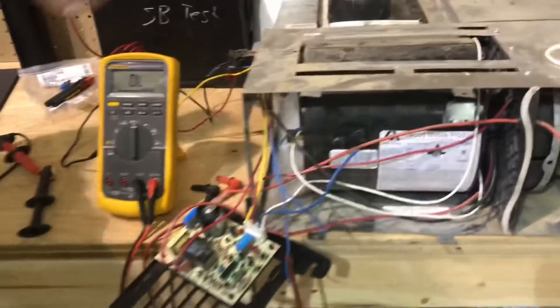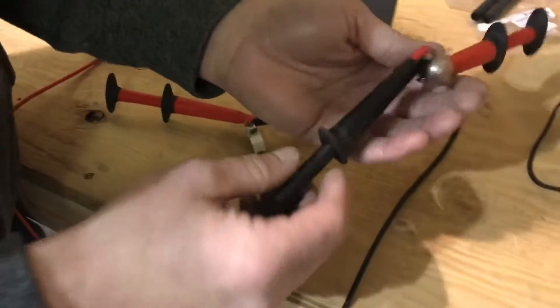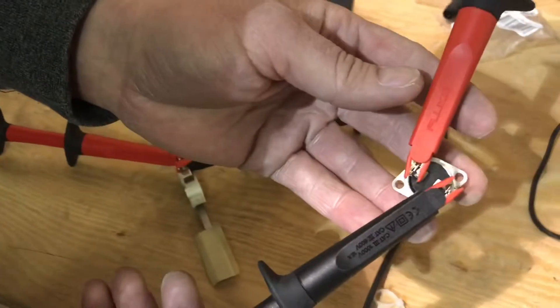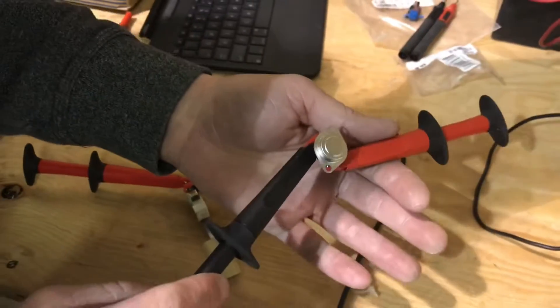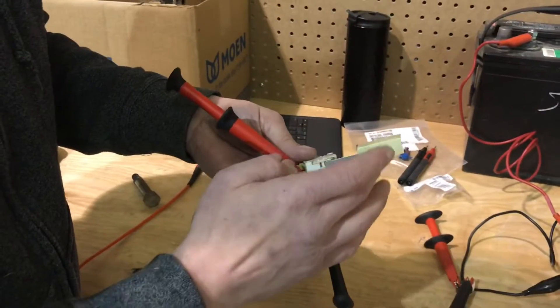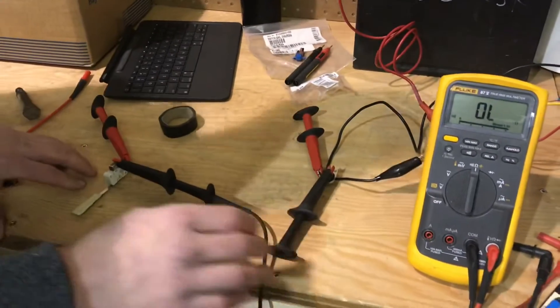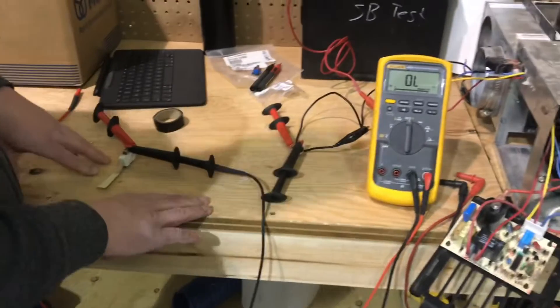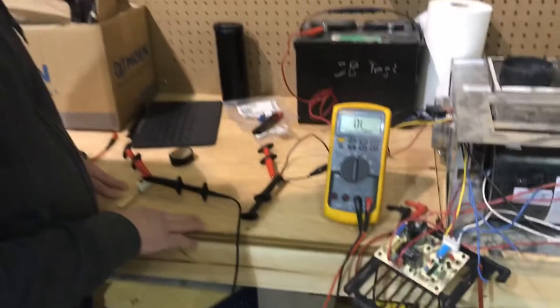So over here we have a couple of examples of those right now all set up to test. Right here we have a high limit switch. Here we have a sail switch. That's what's behind here. Those are part of the proving circuit within the furnace itself.